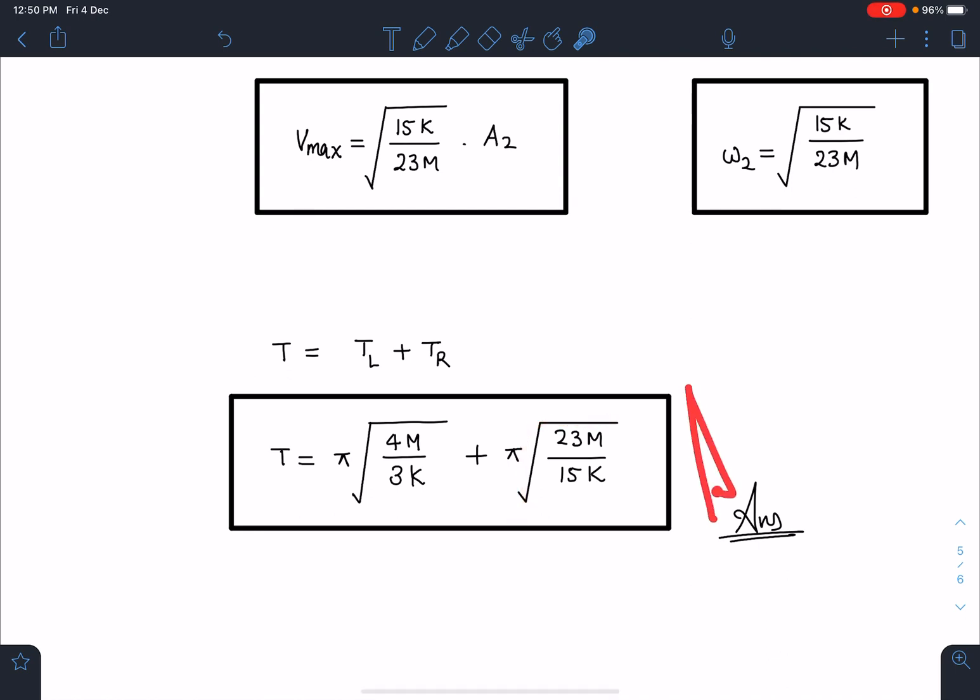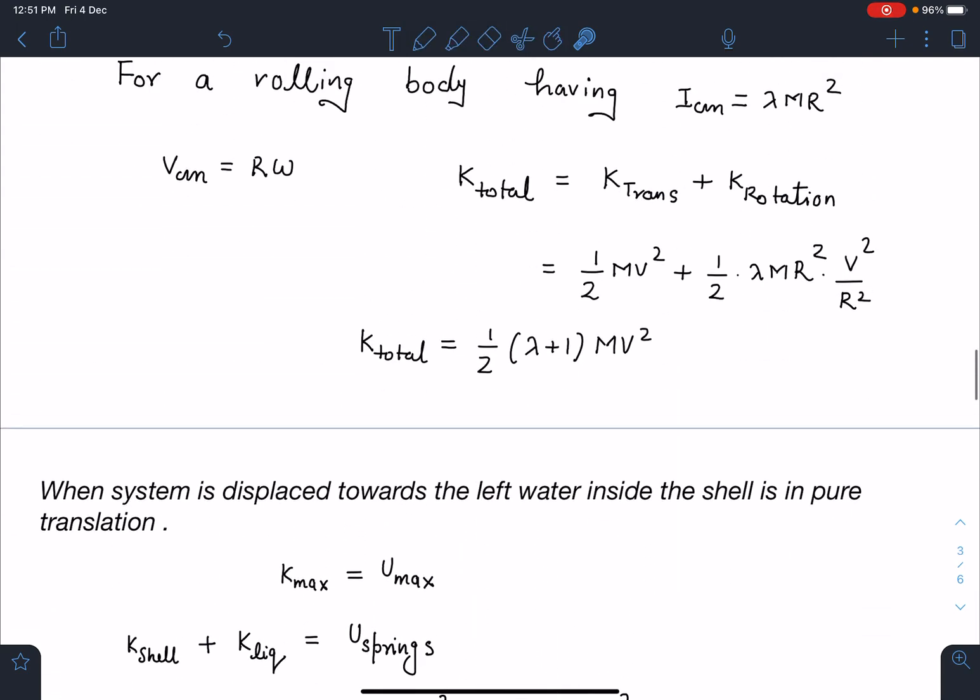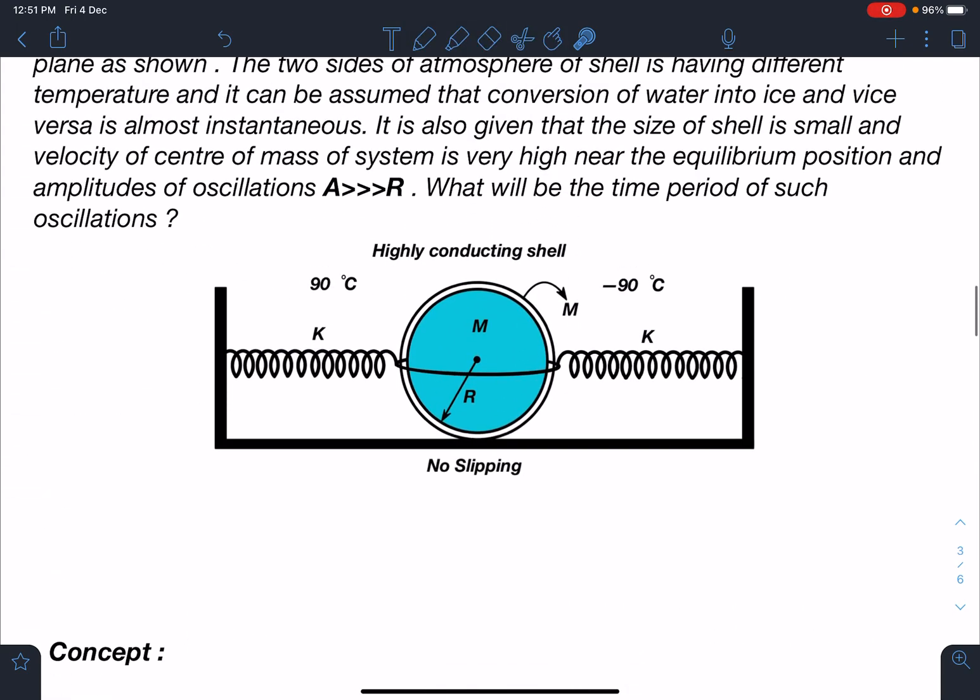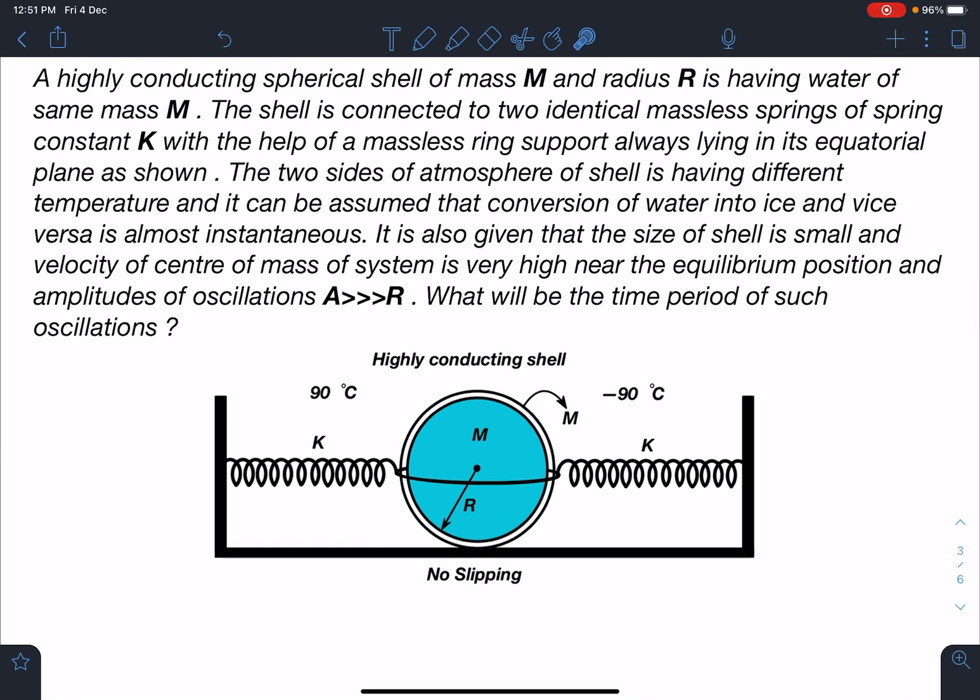I hope this is clear to you. It's a very smart problem, and if you use K_max equals U_max, it becomes very simple and you can do fast calculations. If you have enjoyed this solution and this problem, please leave a like, share this video with others, and don't forget to subscribe to my channel if you haven't already. I'll be coming up very soon with another amazing video. Thanks for watching.